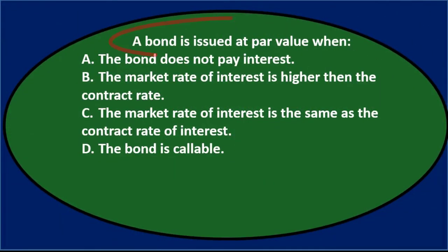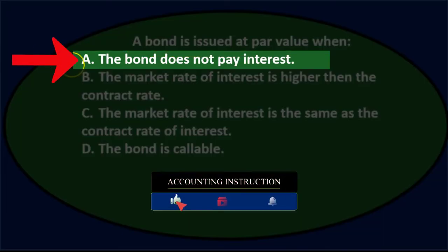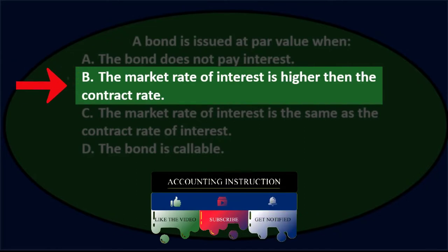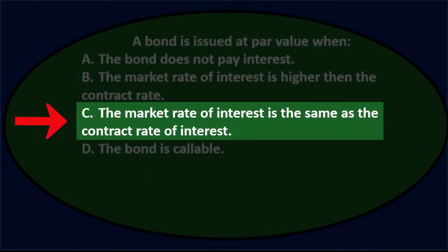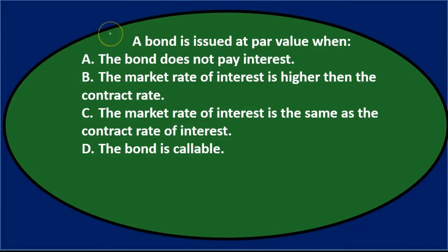Next question: a bond is issued at par value when — A) the bond does not pay interest, B) the market rate of interest is higher than the contract rate, C) the market rate of interest is the same as the contract rate, or D) the bond is callable.